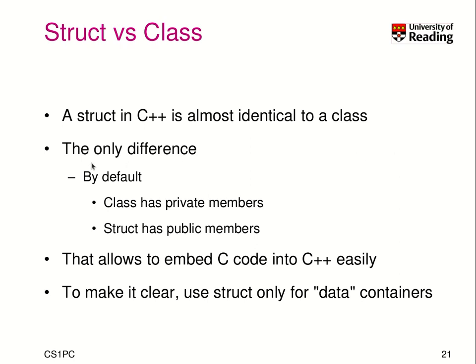The only difference is that by default, when you use the keyword class, everything is a private member, except if you specify the visibility. But everything in a struct is by default a public member, because that was the expectation from C.